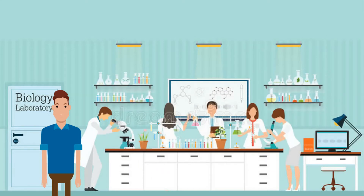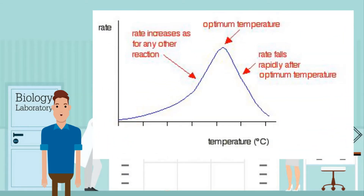You also need to know how to describe and explain the effect of temperature on enzyme action. From chemistry, increased temperature means an increased rate of reaction. With enzymes, this is also true until the optimum temperature of the enzyme is reached. The optimum temperature is the enzyme's favored temperature where its work rate is at maximum. Different enzymes have different optimum temperatures. Human enzymes are usually at 37 degrees Celsius, which is body temperature — it makes sense for them to work fastest at normal body temperature.